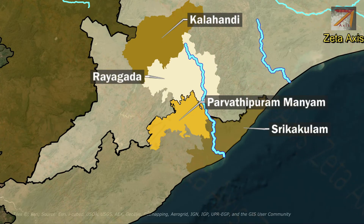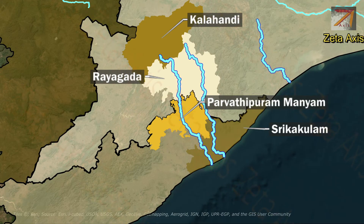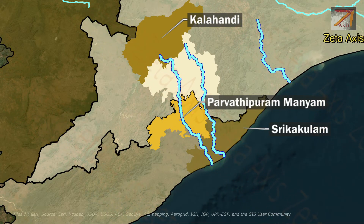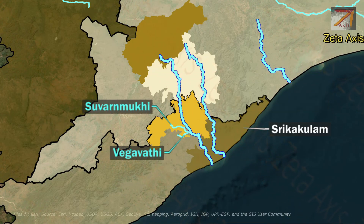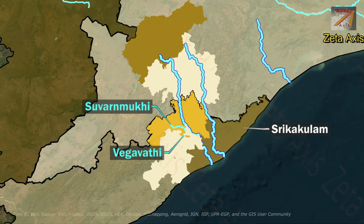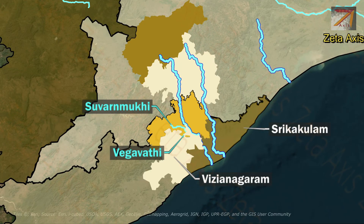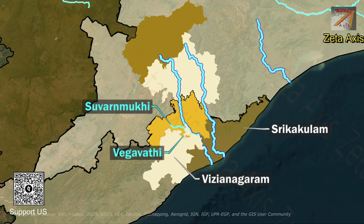Another important river of Andhra Pradesh and Odisha is the Nagavalli river. It originates from Kalahandi district and enters Andhra Pradesh in Parvathipuram Manyam district. Suvarnmukhi and Vegavati are two tributaries of the Nagavalli river which join it in Vizianagaram district. The Nagavalli river then flows into the Bay of Bengal in Srikakulam district of Andhra Pradesh.